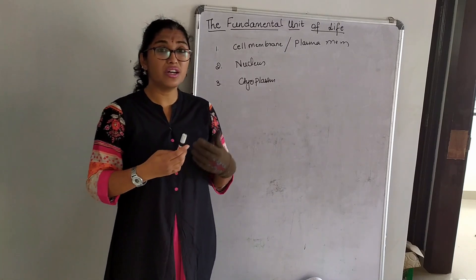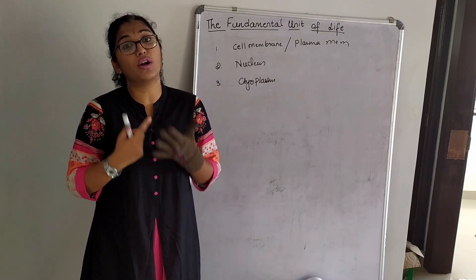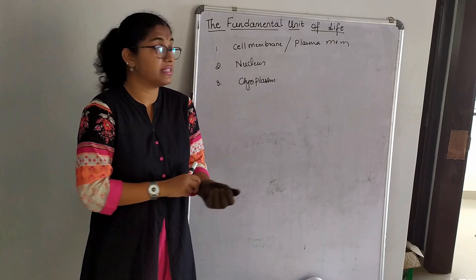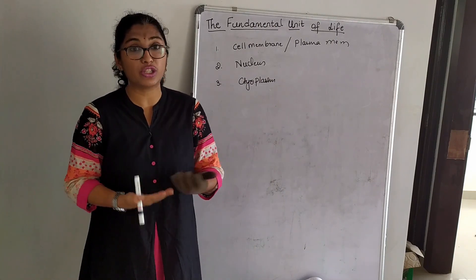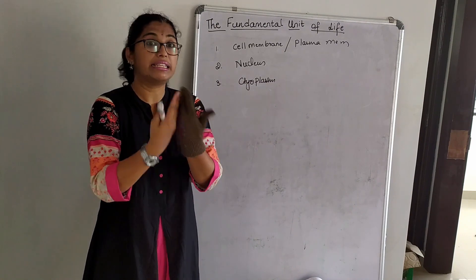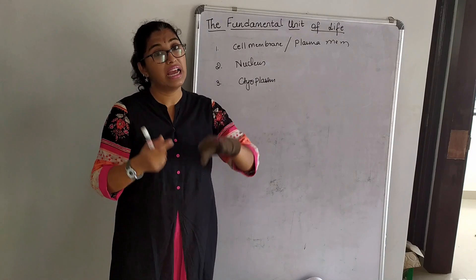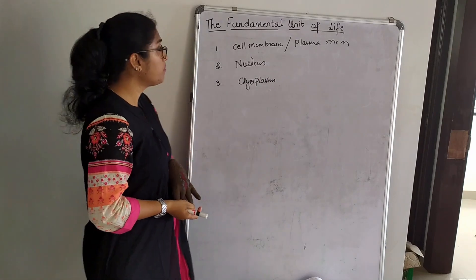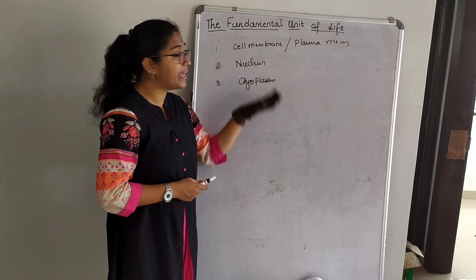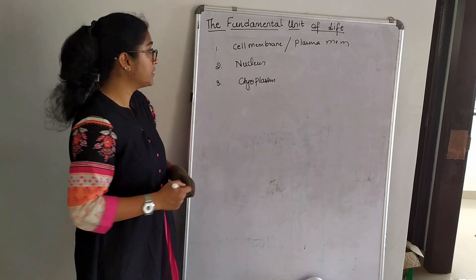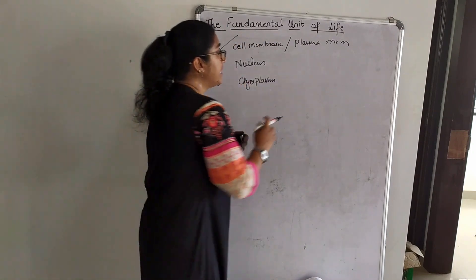We studied diffusion and osmosis — under what type of solution each takes place. If a cell is put into water, the cell can take in or give out water depending on whether the solution is hypotonic, isotonic, or hypertonic. In today's class we will go into detail about the remaining components of the cell. The first one, cell membrane and plasma membrane, we covered yesterday.